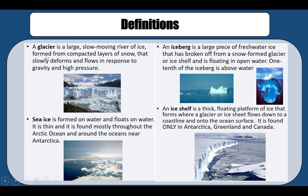A glacier is a large, slow-moving river of ice formed from compacted layers of snow that slowly deforms and flows in response to gravity and high pressure. The key point is that a glacier is typically in the mountain and gravity slowly pushes it down, so a glacier actually moves over time. Sea ice is all the ice formed on top of the sea, typically found in the Arctic Ocean and around Antarctica.